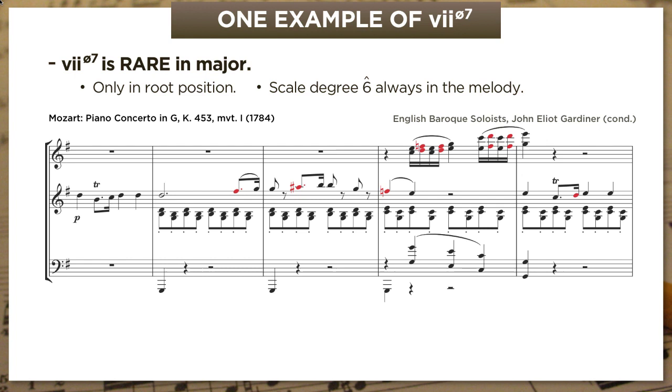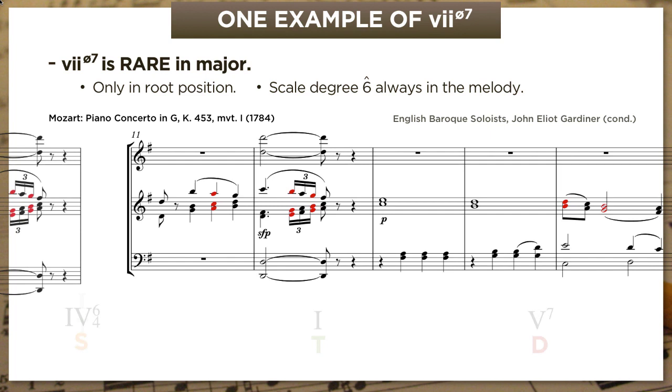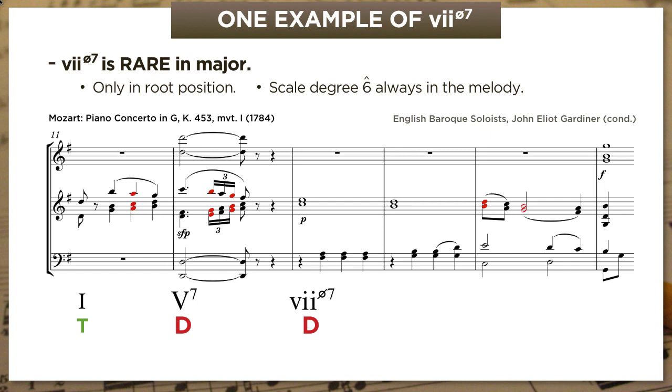So right there is our 7 half-diminished 7 chord, and you'll notice that the voices behave exactly like they do in minor. Scale degrees 7 and 2 go up, and scale degrees 6 and 4 go down.